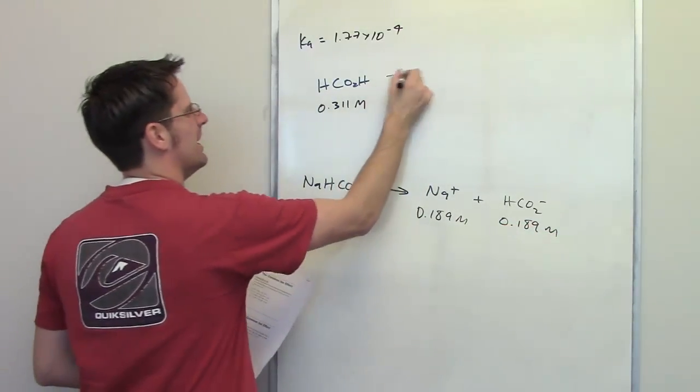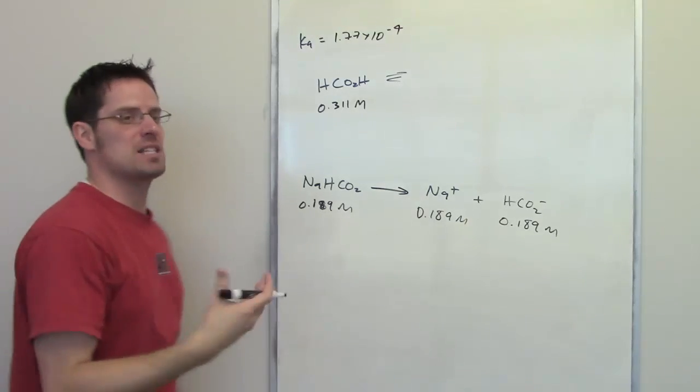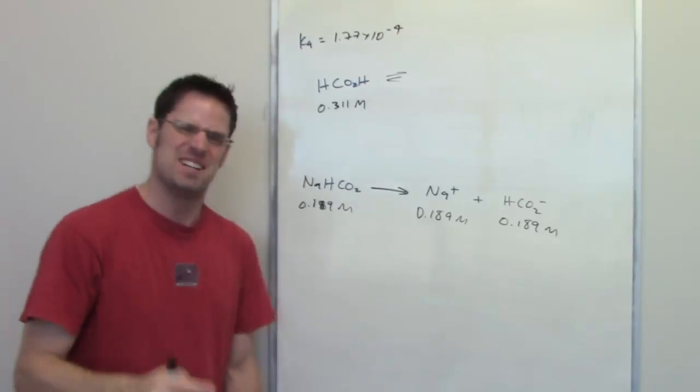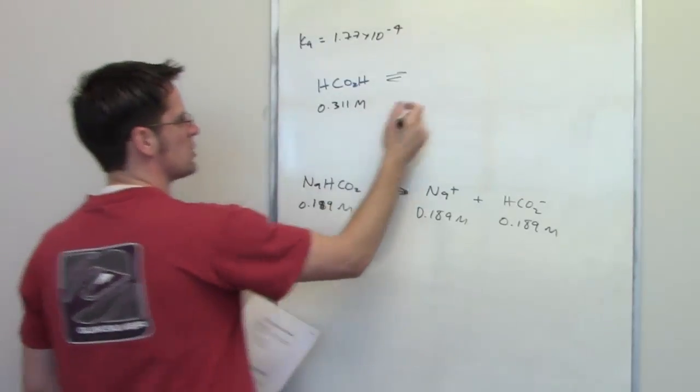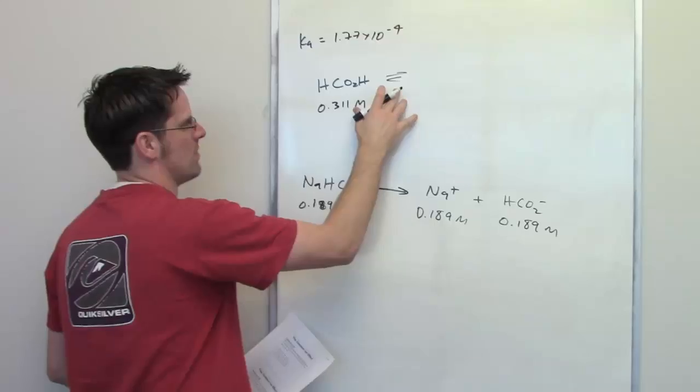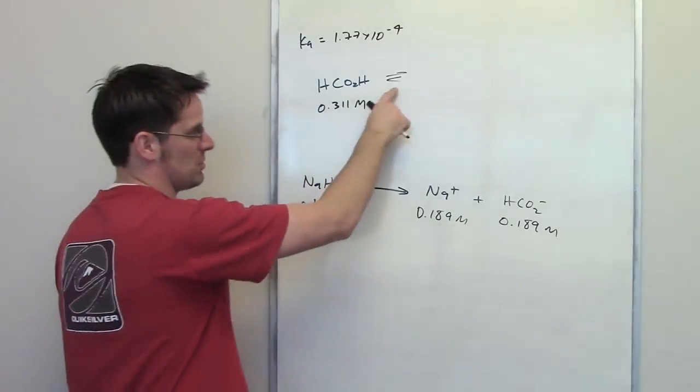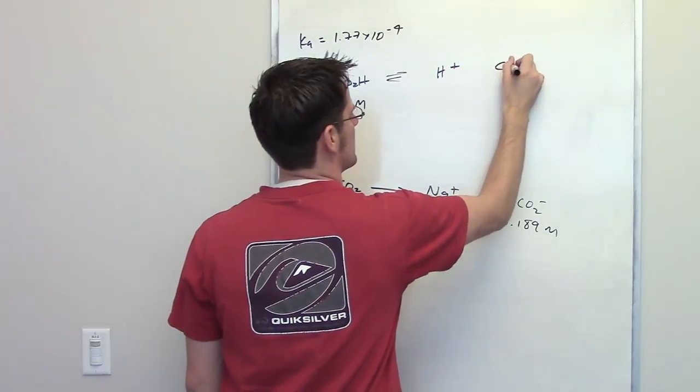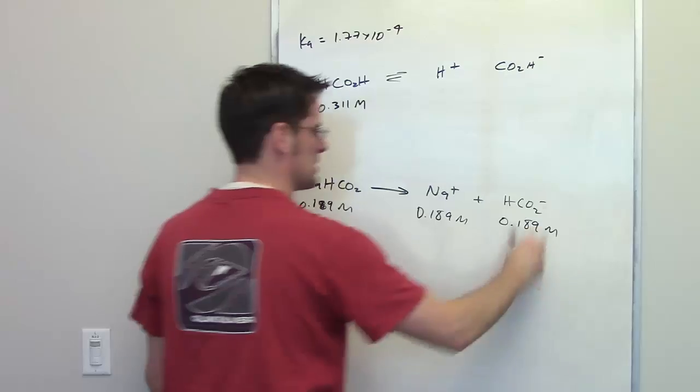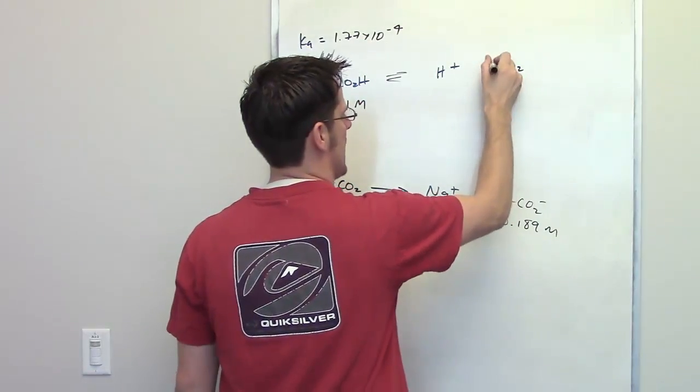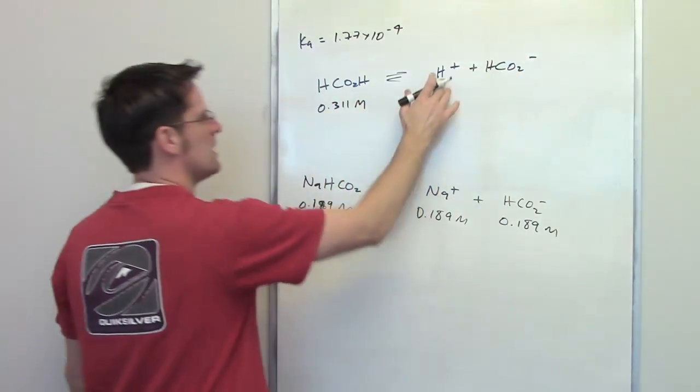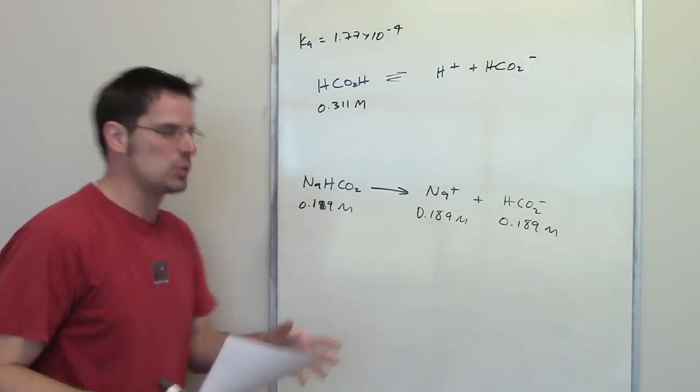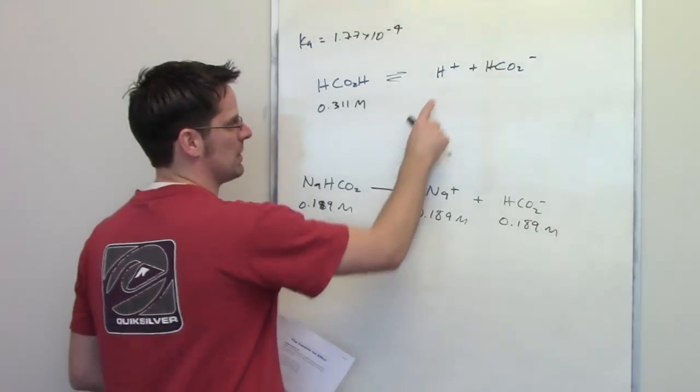Now we look up here, formic acid, which happens to be the acid that red ants inject you with when they bite you, if you've ever experienced that, it's kind of fun, is going to dissociate in an equilibrium way. The reason is because it's not a strong acid, so there's going to be a two-way arrow into H+ and HCO2H-, and I can rewrite that to look like this thing, because indeed it is that thing, it is formate, so it gives H-plus off and formate. In order to determine the final pH, we're going to need to determine the final equilibrium concentration of H+.